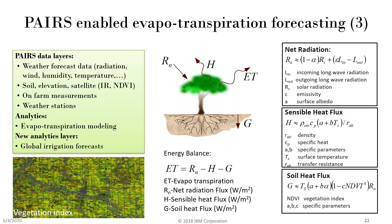The third use case is how PAIRS can enable complex analytics such as evapotranspiration. Evapotranspiration is modeled as an energy balance of three components: net radiation, sensible heat flux, and soil heat flux. Each of these components is in turn modeled based on detailed physical modeling. Based on various PAIRS data layers, we assess evapotranspiration, which is then available as a new analytics layer.